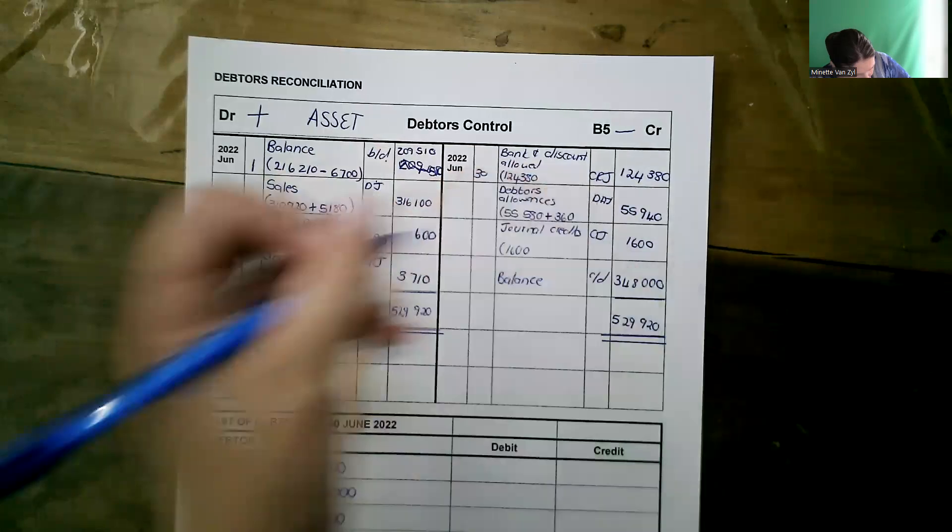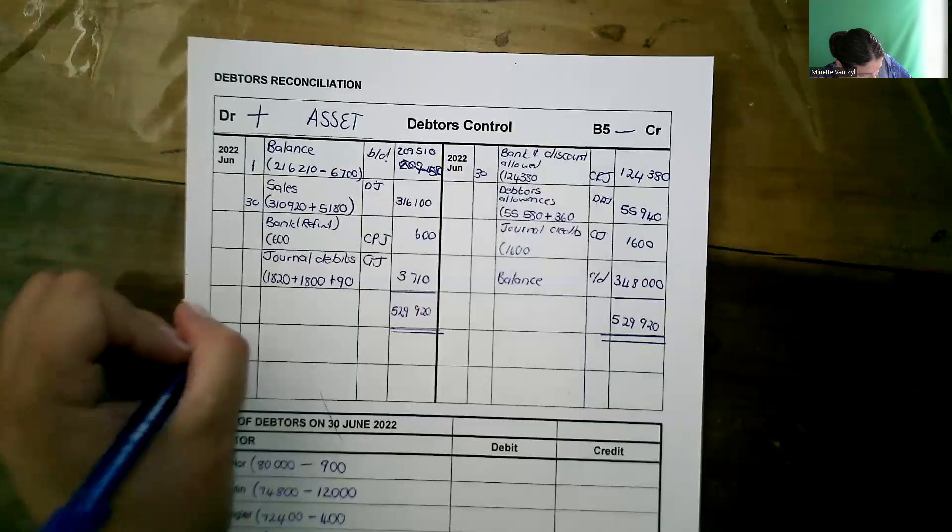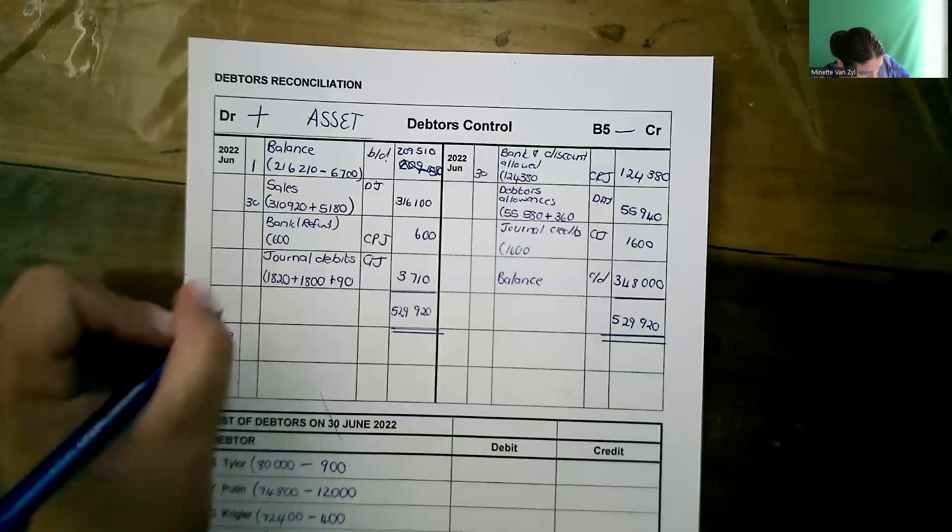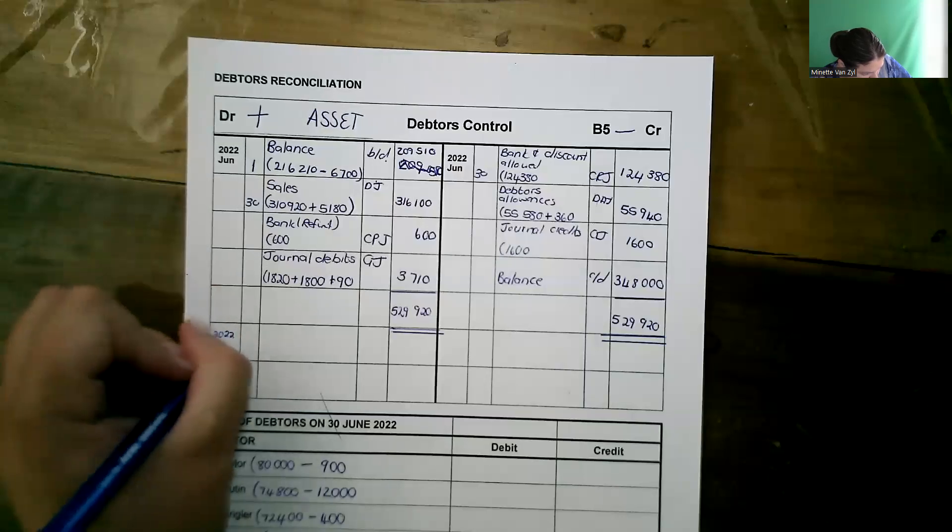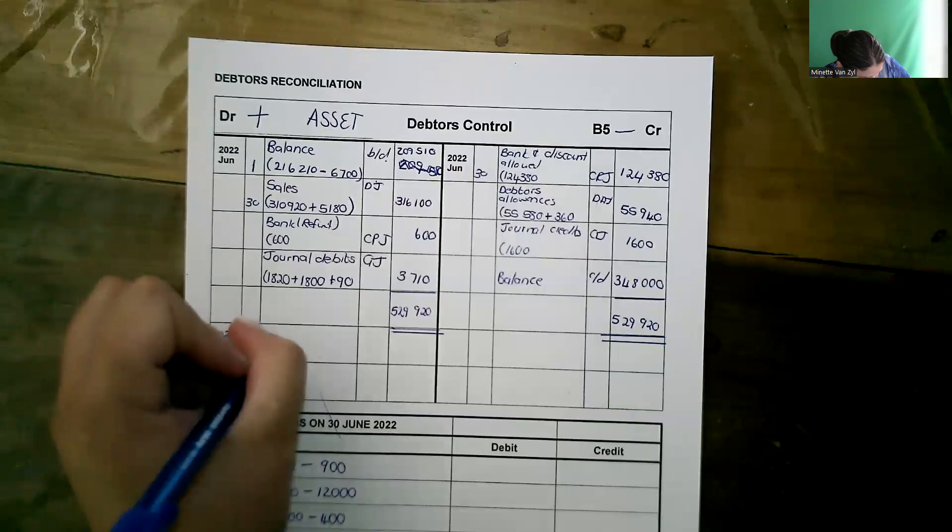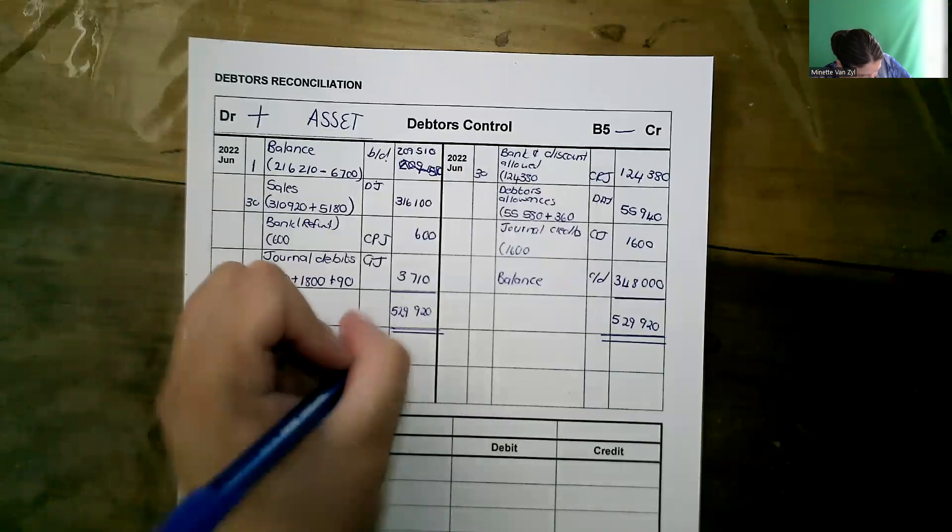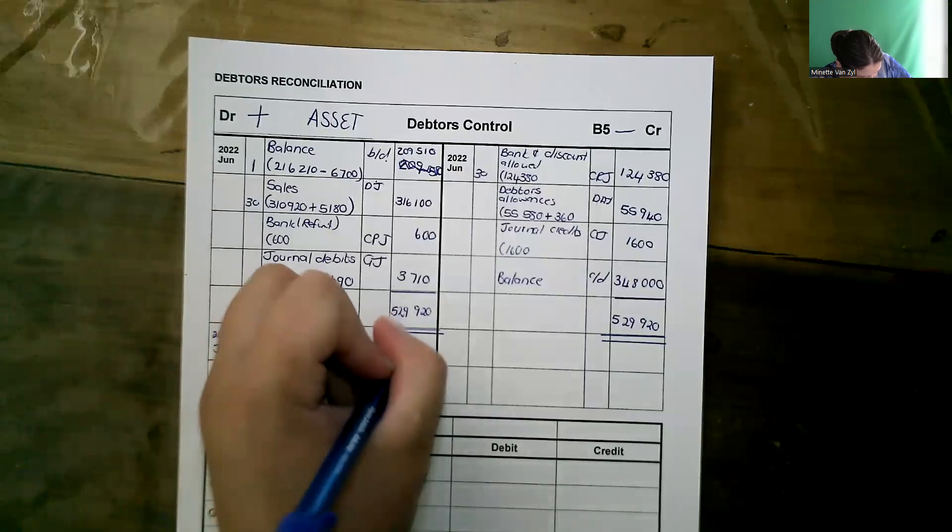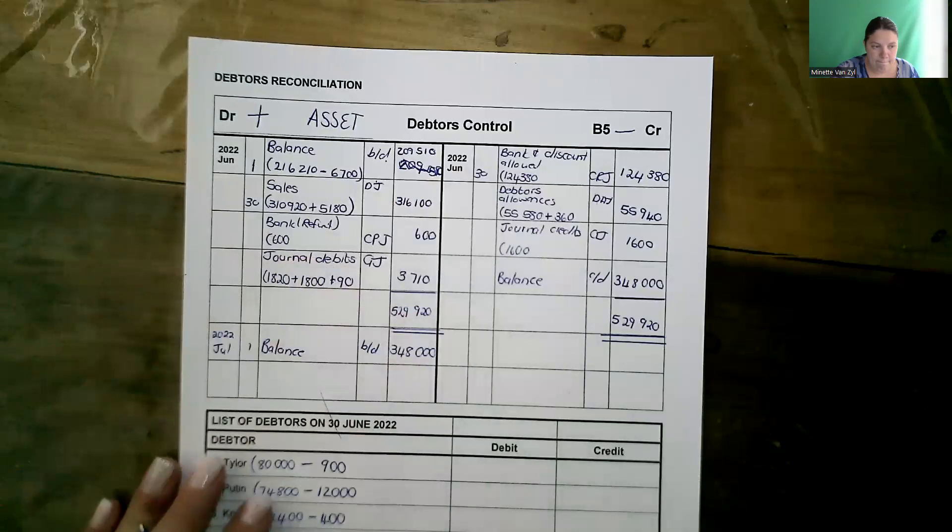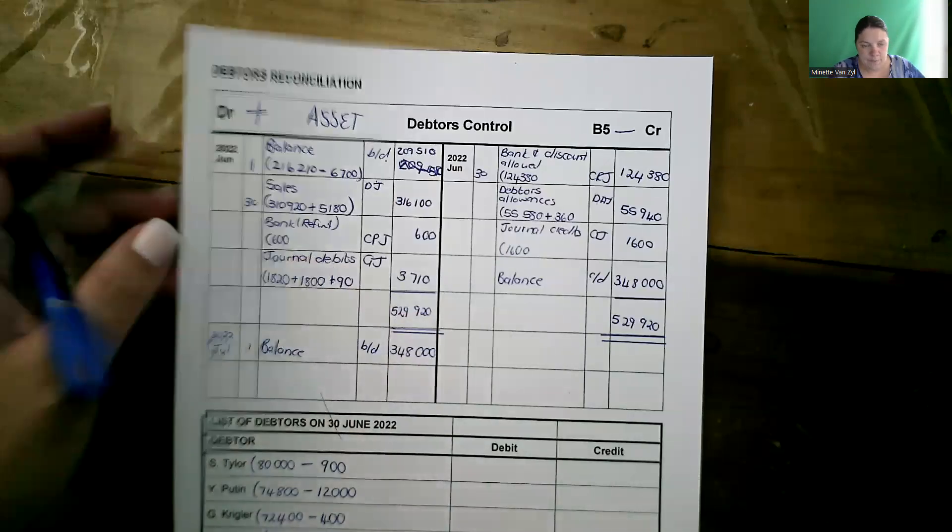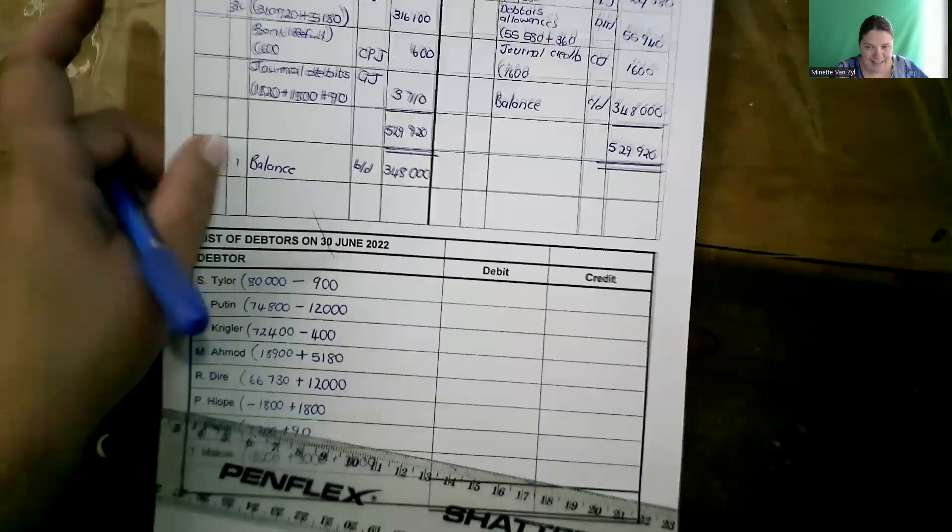Minus everything on top gives me 348,000. And that is our balance. Carry down and bring it down for next month. July 1st, balance brought down 348,000. All right. Let's close off our list.